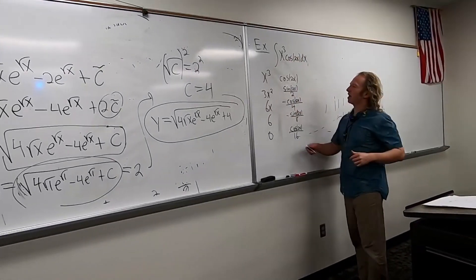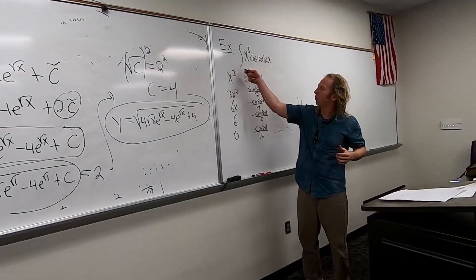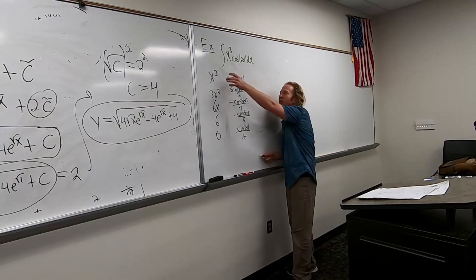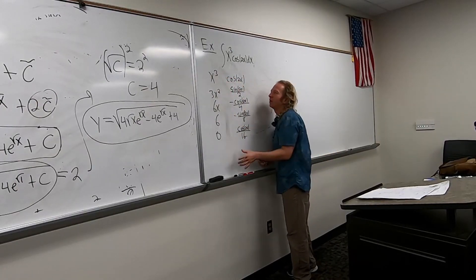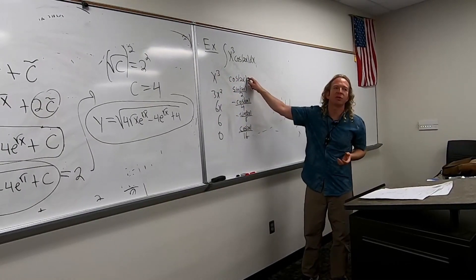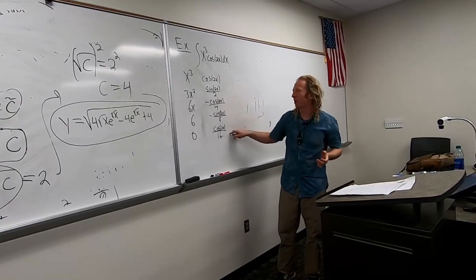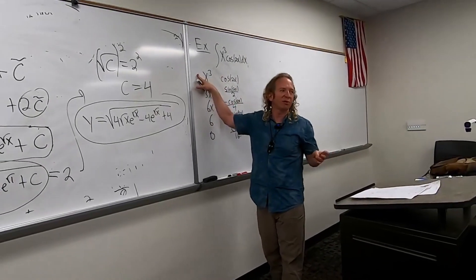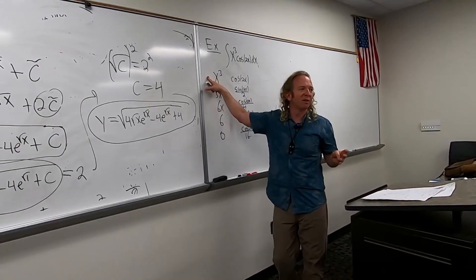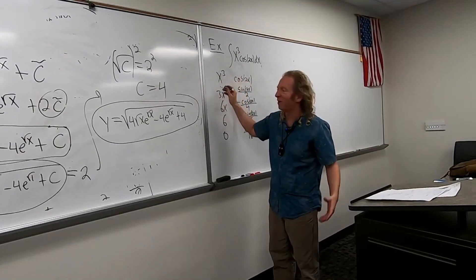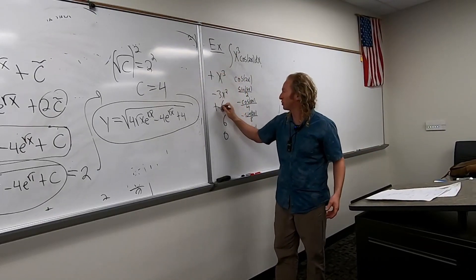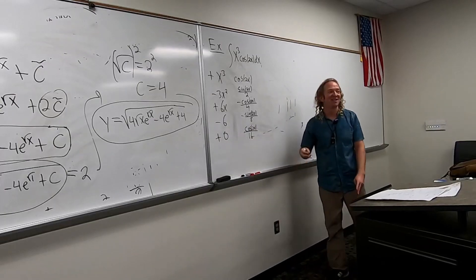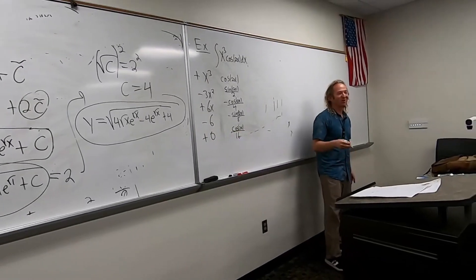So you pick the piece that after repeated differentiation is eventually zero, and then you just keep differentiating it. Then you pick the other piece and keep integrating it. Do you remember what symbol to start with — plus or minus? Plus, minus, plus, minus, plus. The fun part is writing the answer down.